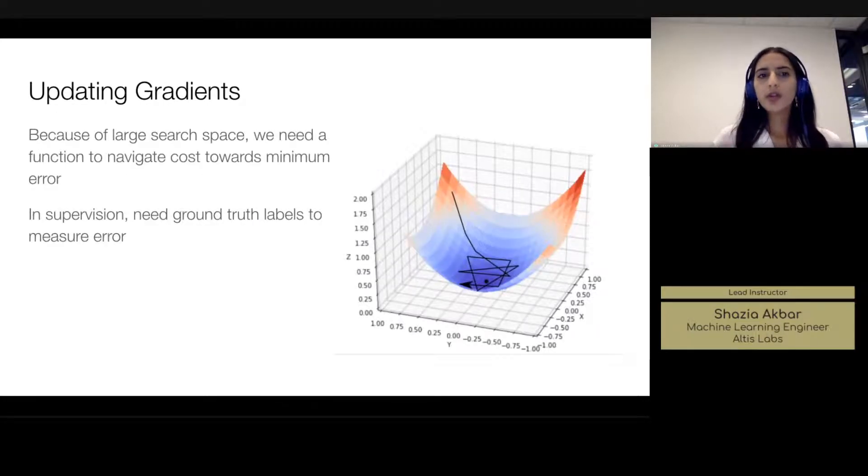We talked about neurons and an activation function and that we have a series of weights that we need to optimize in order to successfully perform a particular task, whether that be classification or a regression task. Because of the very large search space we're working with, with deep neural networks, we do need some sort of function in order to navigate the space and to really have some way of navigating our way to a global minimum within this space as well.